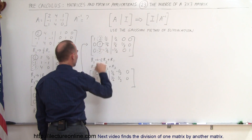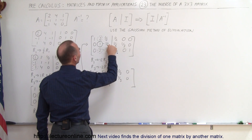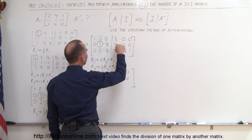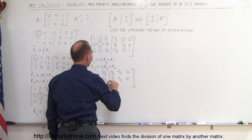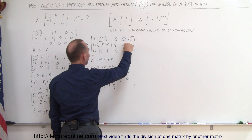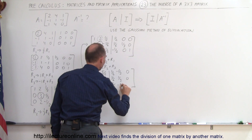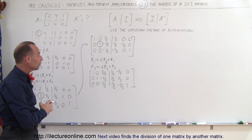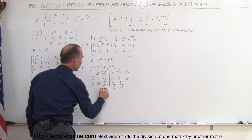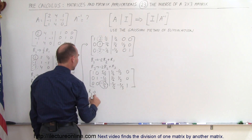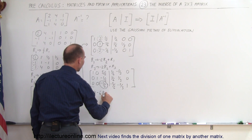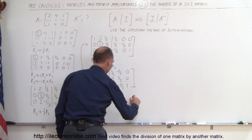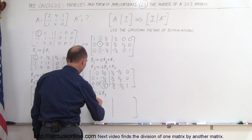Negative 2 times negative one sixth gives positive one third, added to negative one half gives negative one sixth. Negative 2 times one sixth is negative one third, added to negative one half is negative five sixths. Negative 2 times one third is negative two thirds, added to 0 stays negative two thirds. The last entry doesn't change. We're getting closer — we've now taken care of the first two columns.